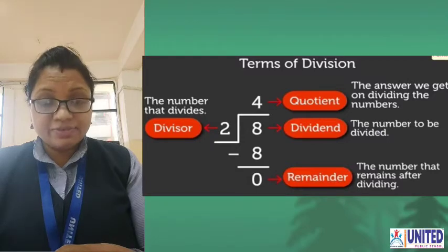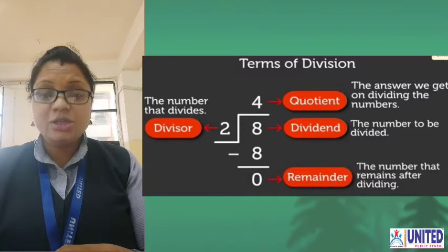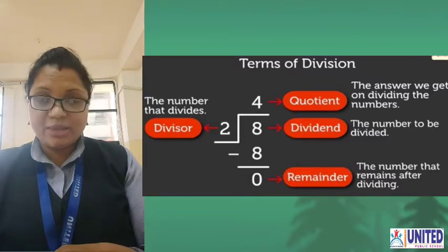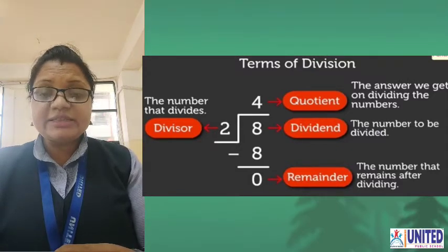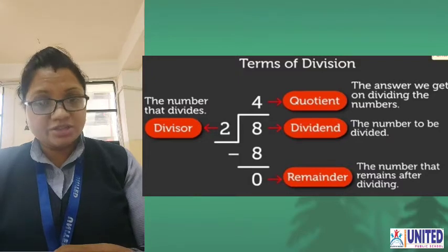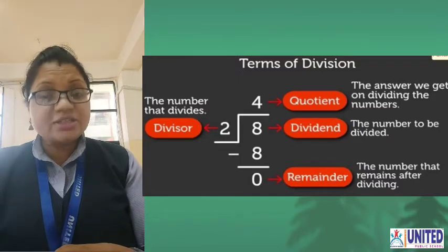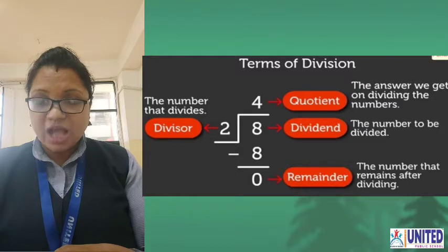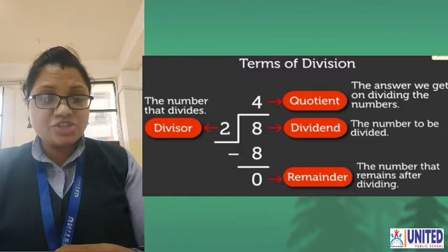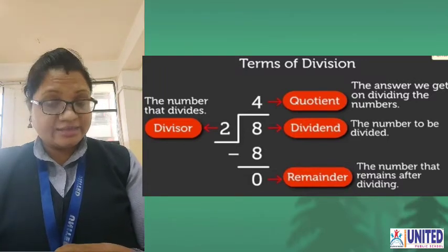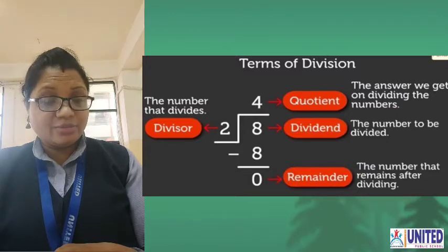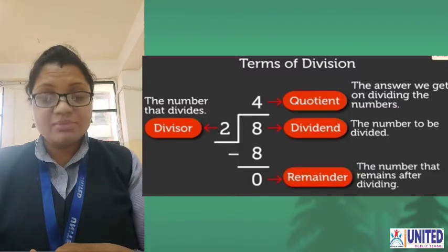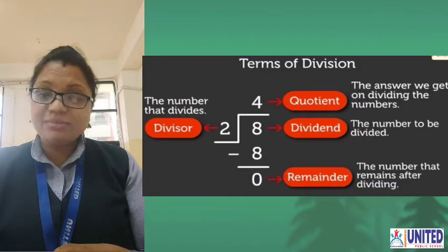Which are the 4 terms? Dividend, divisor, quotient, and the remainder. So now, today we see what is the relation between division and multiplication. Division and multiplication — both are the opposite to each other. Both are the inverse.